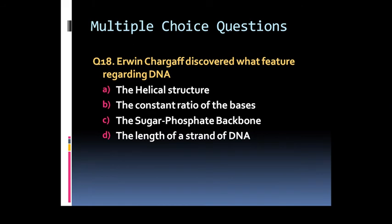Question 18: Arvind Chargaff discovered what feature regarding DNA? Options are A: the helical structure, B: the constant ratio of bases, C: the sugar phosphate backbone, or D: the length of a strand of DNA.